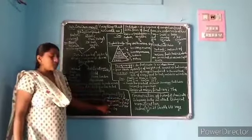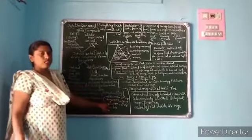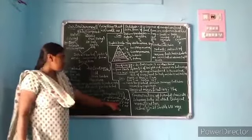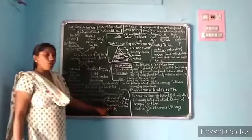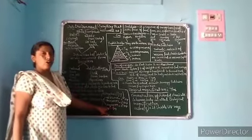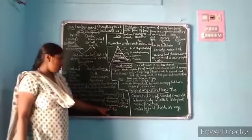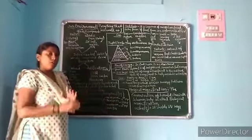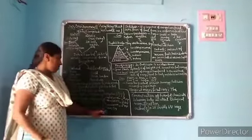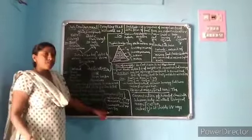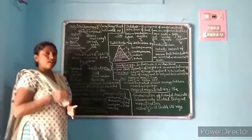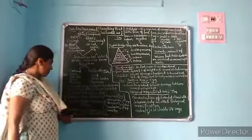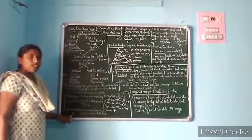Herbivores means feeding on plants — they form the second trophic level. Carnivores means feeding on meat. Omnivores eat both plants and flesh. Parasites live on other cells.